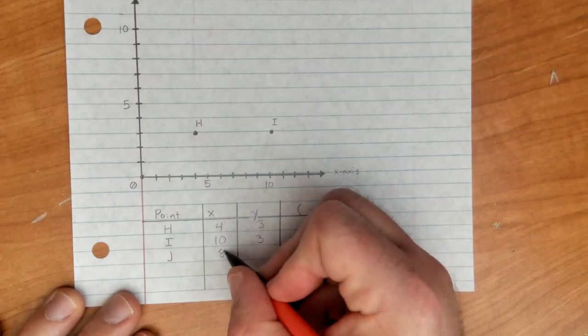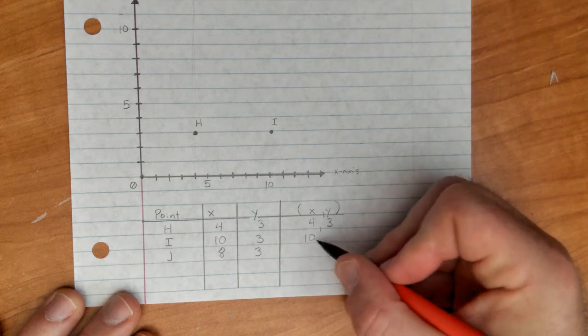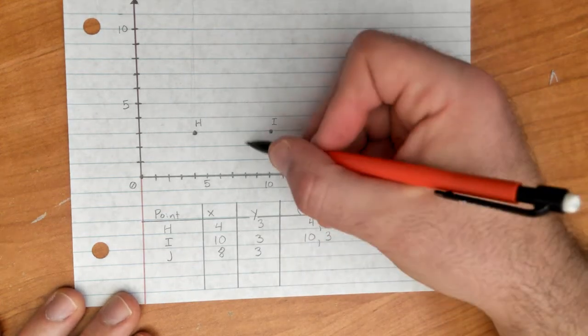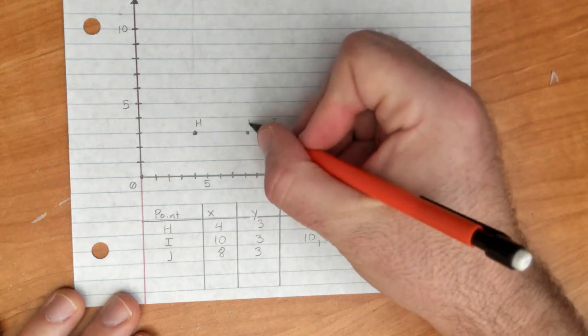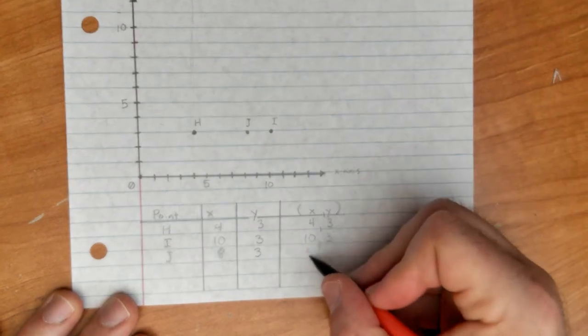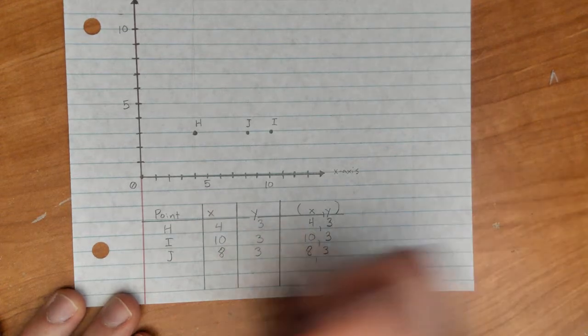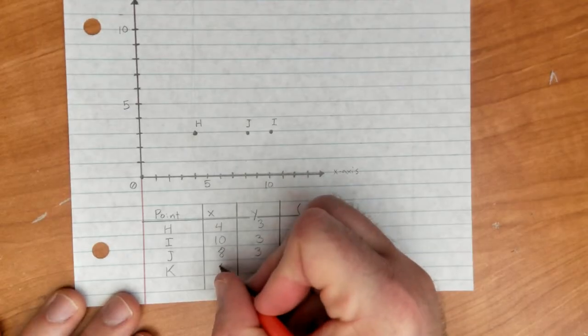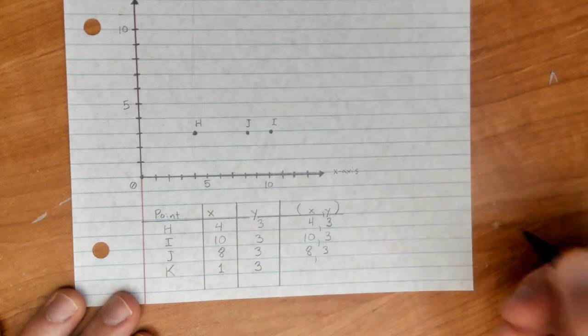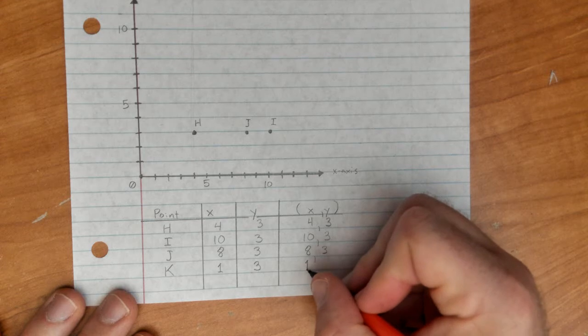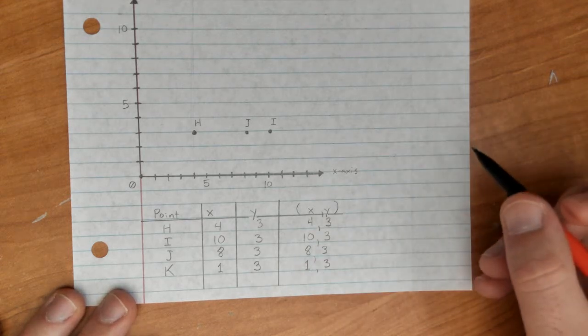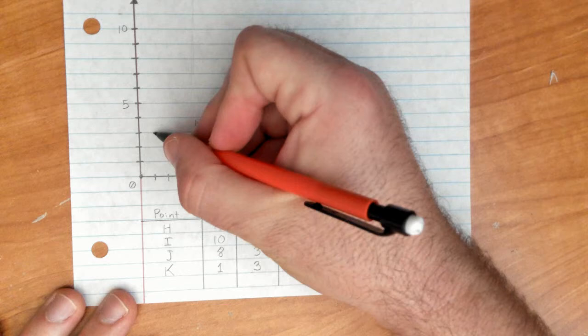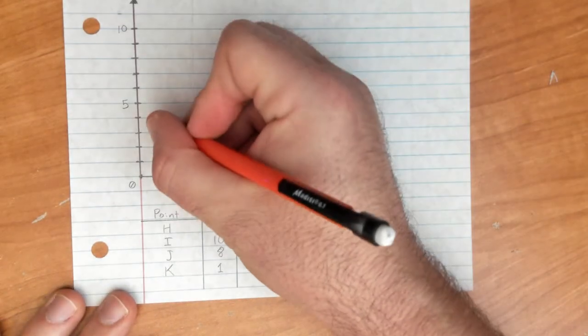Let's go on to point J. Point J is 8, 3. So here's 10, 9, 8. I go right here and then up one, two, three. Point J should be right there. K is next. For K, let's do x is 1, y is 3. So 1, comma 3. Now I'm hoping that most of you are already noticing a pattern here. For one, up one, two, three. There are a couple things I want you to notice. We'll go ahead and do one more.